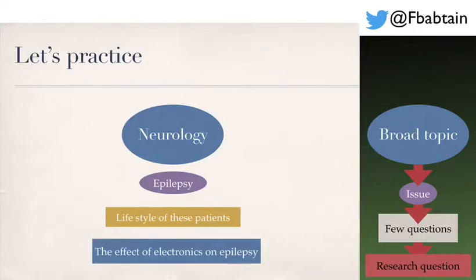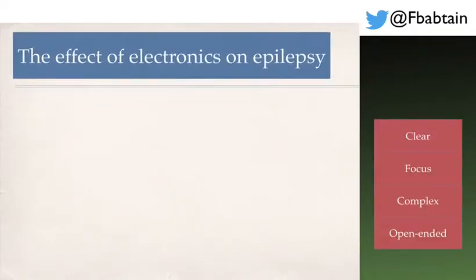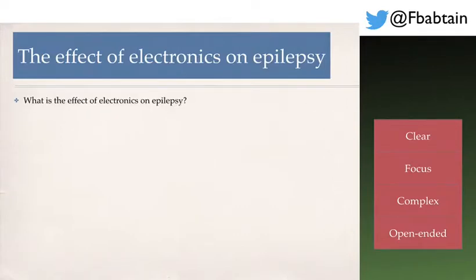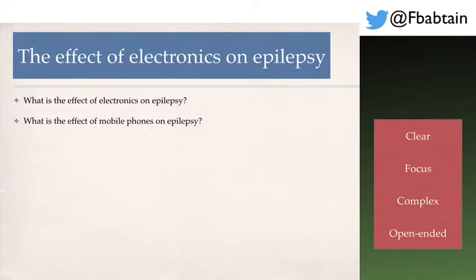To be specific, the effect of electronics on epilepsy is the topic I want to research — but this is not my research question yet. When I formulate my research question, it should be clear, focused, somewhat complex, and open-ended. For example, 'What is the effect of electronics on epilepsy?' is very straightforward and vague — electronics can be cell phones, laptops, iPads, and so on. 'What is the effect of mobile phones on epilepsy?' is a bit more focused, but still looks simple and straightforward.